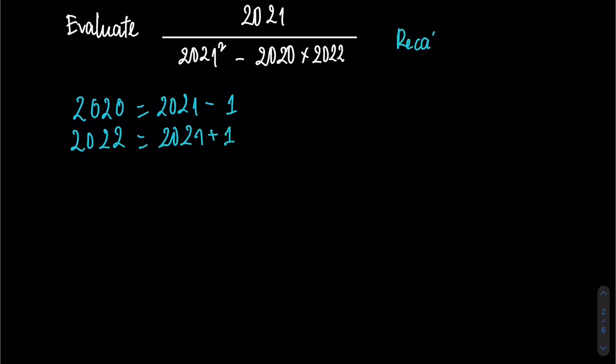Now let me recall the formula: a squared minus b squared equals (a minus b) times (a plus b).